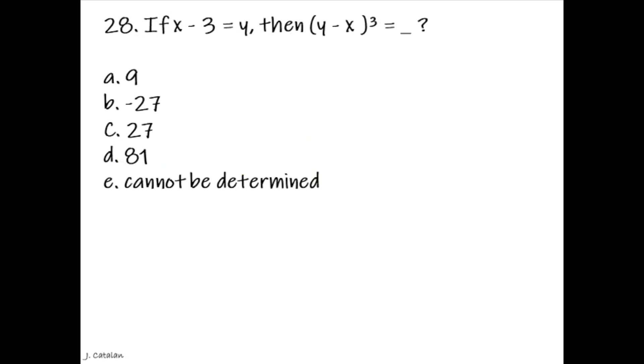Question. If x minus 3 equals y, then, y minus x to the power of 3 equals underscore. Answer. Negative 27.